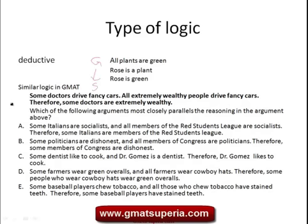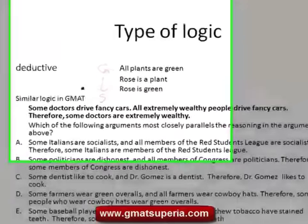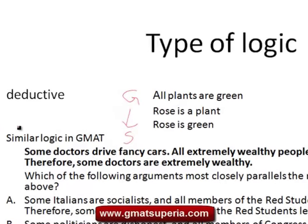For example: all plants are green; a rose is a plant; therefore a rose is green. The conclusion 'rose is green' is well supported by the preceding statements, so this is something you cannot question — it is completely valid in deductive logic.